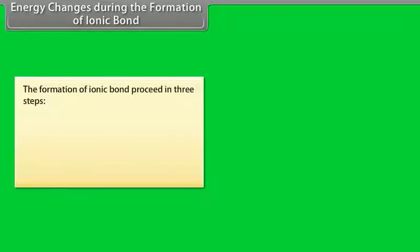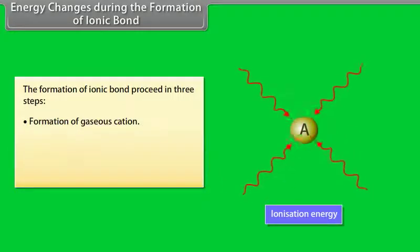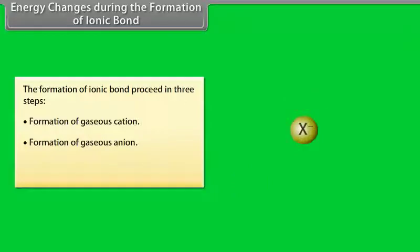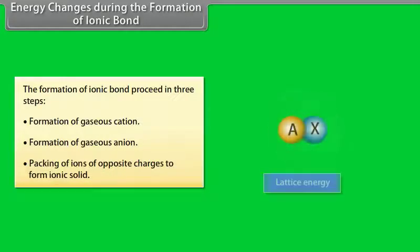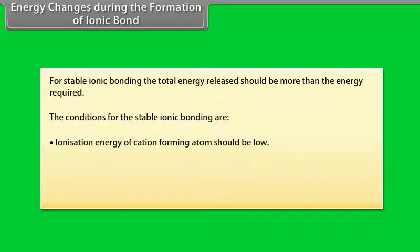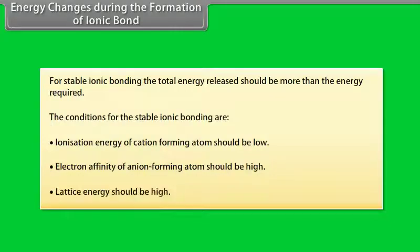Energy changes during the formation of an ionic bond proceed in 3 steps. Step 1: Formation of gaseous cation — the energy required is called ionization energy. Step 2: Formation of gaseous anion — the energy released is called electron affinity. Step 3: Packing of ions of opposite charges to form ionic solid — the energy released is called lattice energy. For stable ionic bonding, the total energy released should be more than the energy required. The conditions are: ionization energy of the cation-forming atom should be low, electron affinity of the anion-forming atom should be high, and lattice energy should be high.